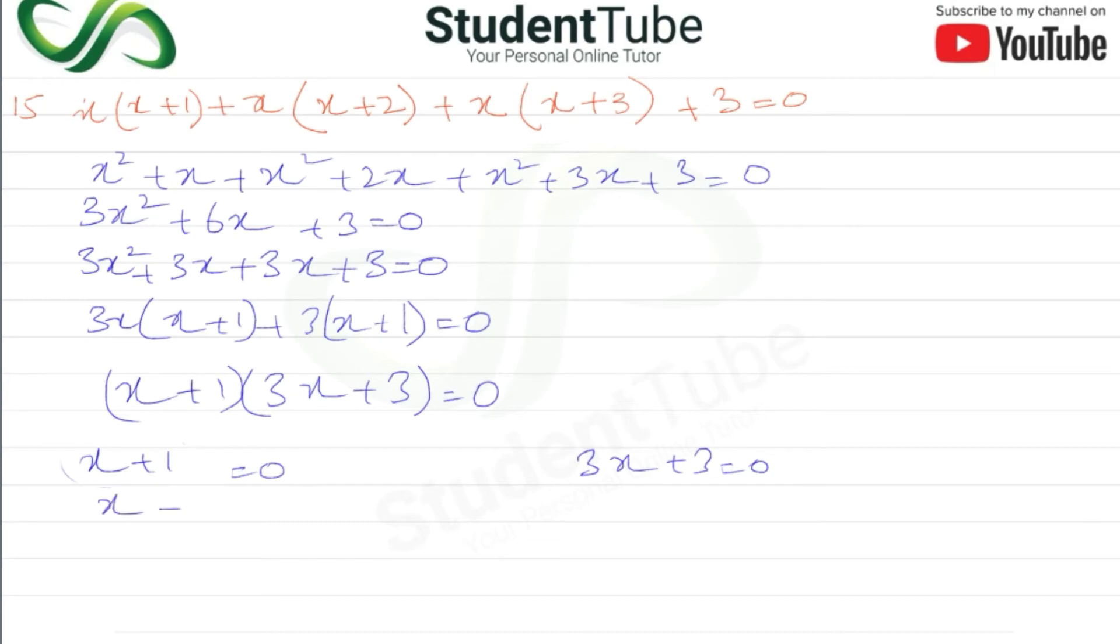From x+1 = 0, we get x = -1. From 3x+3 = 0, we get 3x = -3, so x = -3/3 = -1.